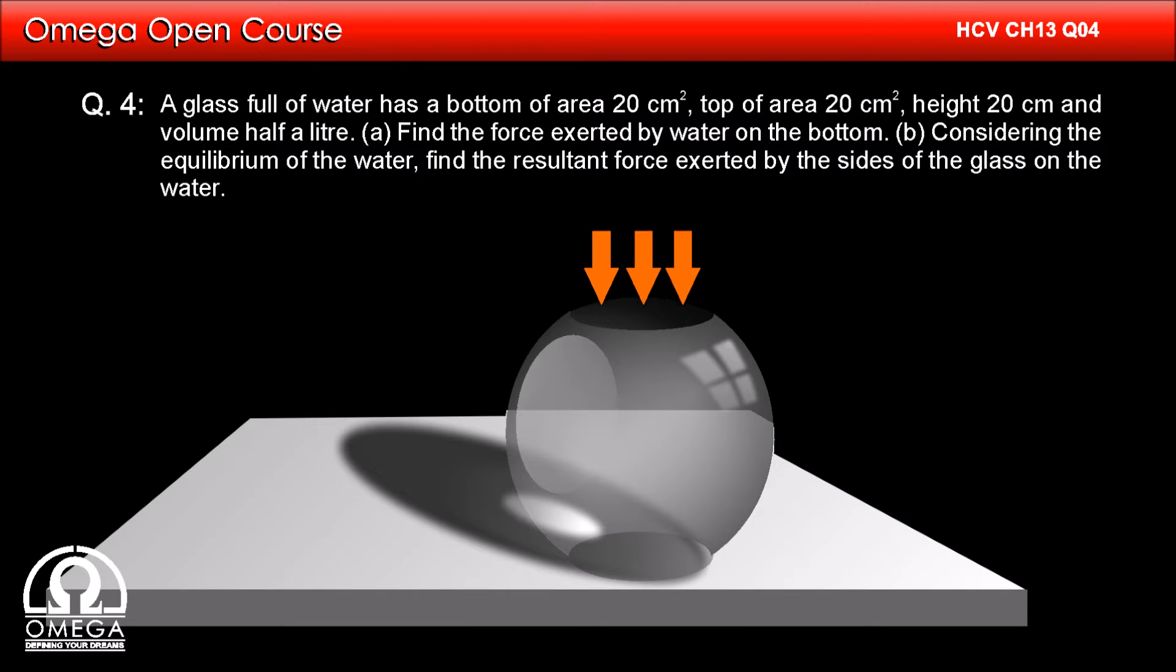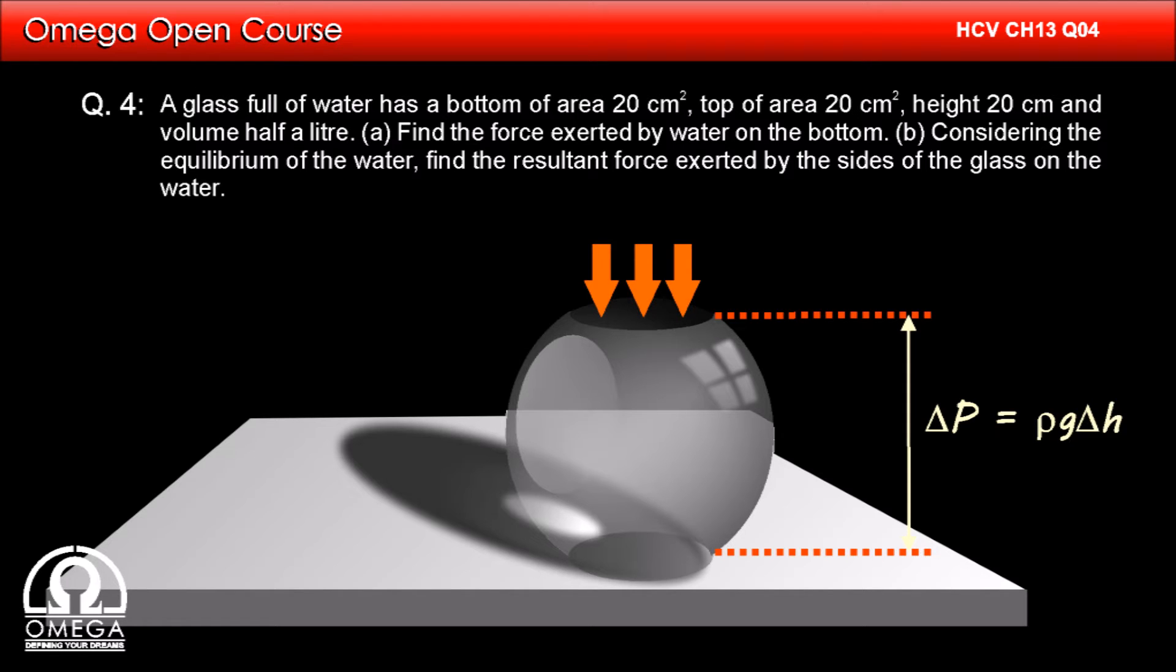If you look at the water in the glass, atmospheric pressure is pushing it downwards. The water column of length 20 cm will exert an extra pressure ΔP which is equal to ρgΔh. Thus, the pressure at the bottom of the glass is atmospheric pressure P₀ plus ρgΔh.